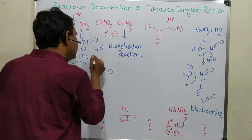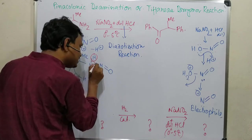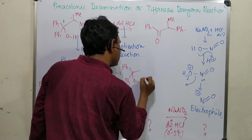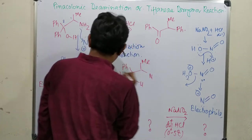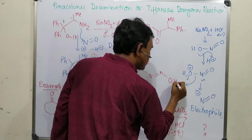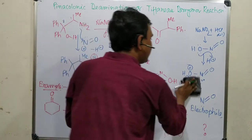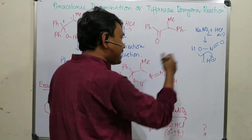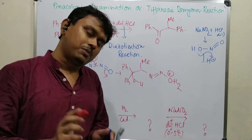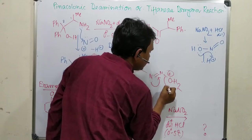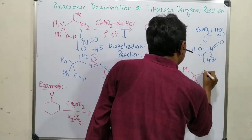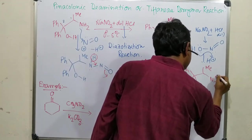We know that nitroso compounds can undergo tautomerization, so the hydrogen shifts, producing a Ph, OH, methyl group connected to N with a double bond — this is the tautomeric form. The medium is still acidic, so this nitrogen can be protonated, forming N—H and OH₂⁺ — similar to diazonium salt preparation. The electrons push and the OH₂⁺ leaves, producing the diazonium species: Ph, OH, methyl, and N₂⁺.